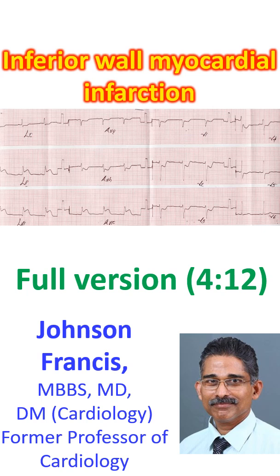ECG shows ST segment elevation in leads 2, 3 and AVF of about 3 mm. ST segment depression is seen in leads 1, AVL and V1 to V5. Overall, features are suggestive of hyperacute phase of inferior wall myocardial infarction with reciprocal ST segment depression in anterior leads.